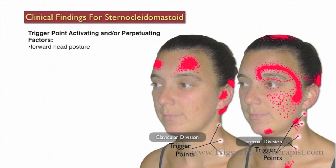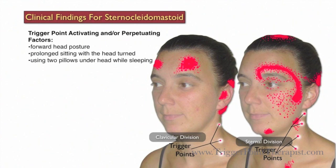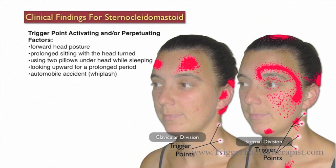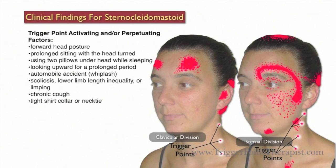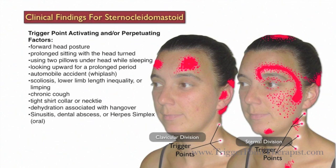Some factors that may activate or perpetuate trigger points in the sternocleidomastoid muscle include forward head posture, prolonged sitting with the head turned, using two pillows under the head while sleeping, looking up for a long period of time, automobile accidents such as whiplash injuries, scoliosis, lower limb length inequality or limping, chronic cough, tight shirt collar or a tight necktie, dehydration associated with hangovers, and sinusitis, dental abscess, or herpes simplex oral.